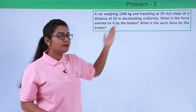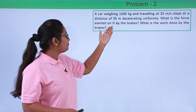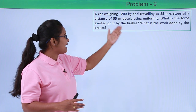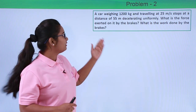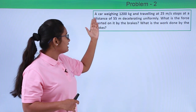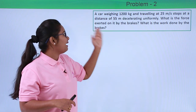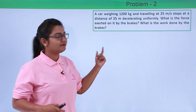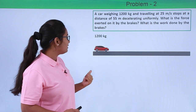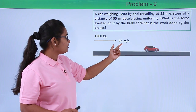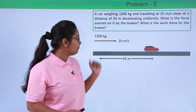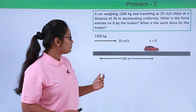The car is traveling with a velocity of 25 meters per second and stops at a distance of 55 meters while decelerating uniformly — that is, it went on reducing its speed uniformly to come to a stop 55 meters away. We need to calculate the force exerted by the brakes and the work done by that force. This is the car which weighs 1200 kilograms, moving with a uniform velocity of 25 meters per second, and it has come to a stop after 55 meters.